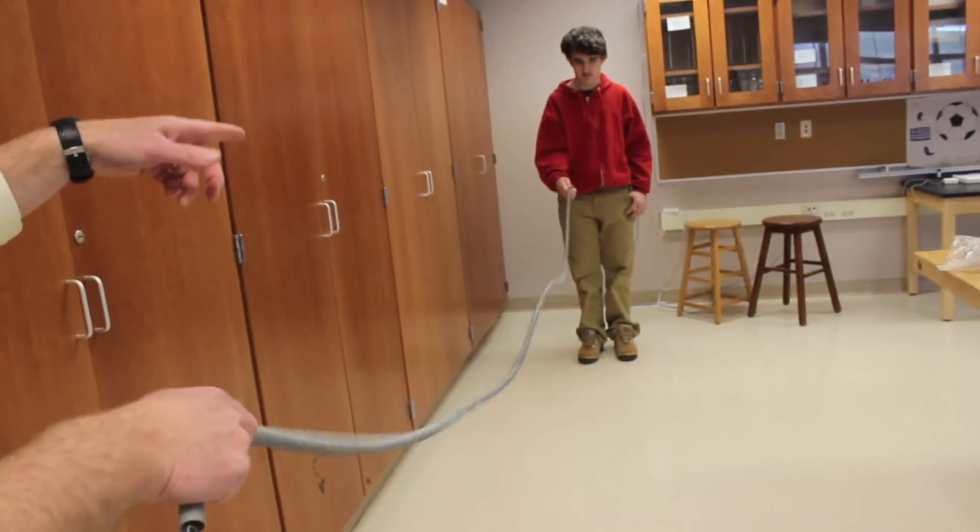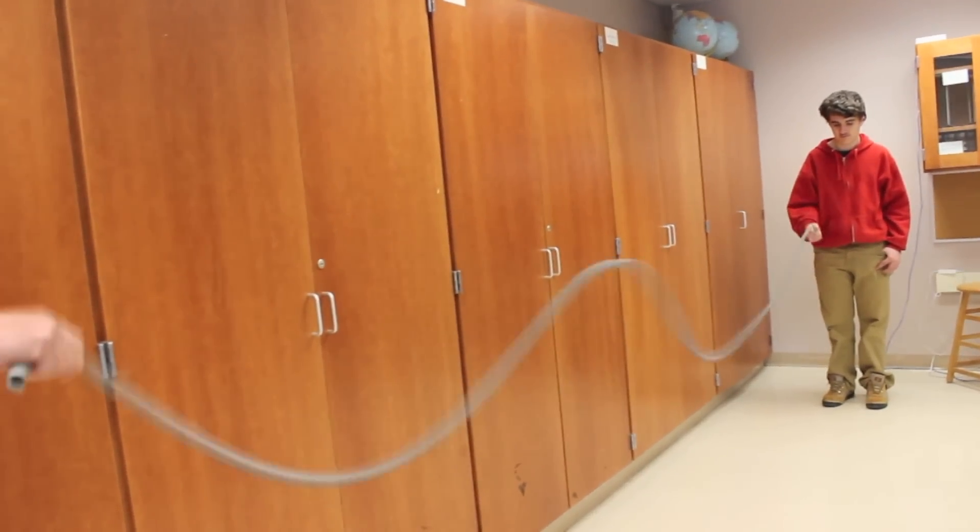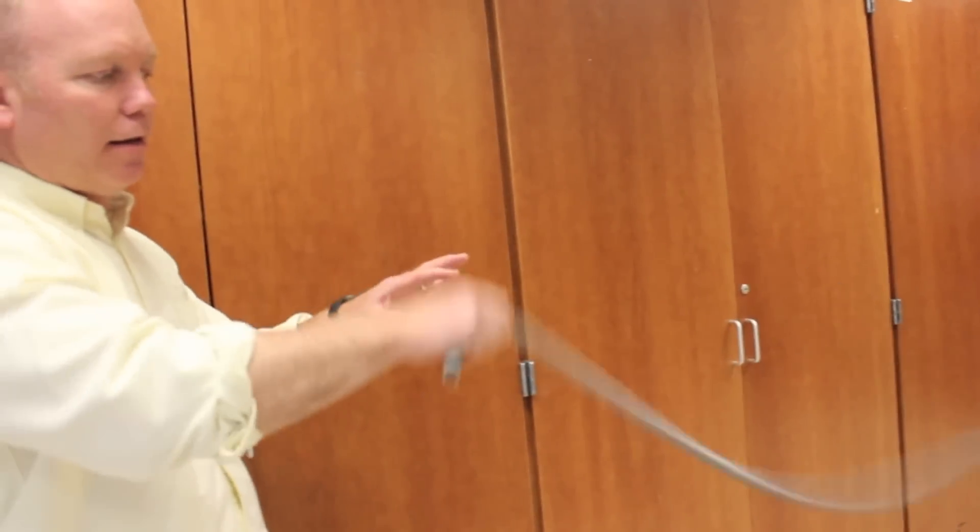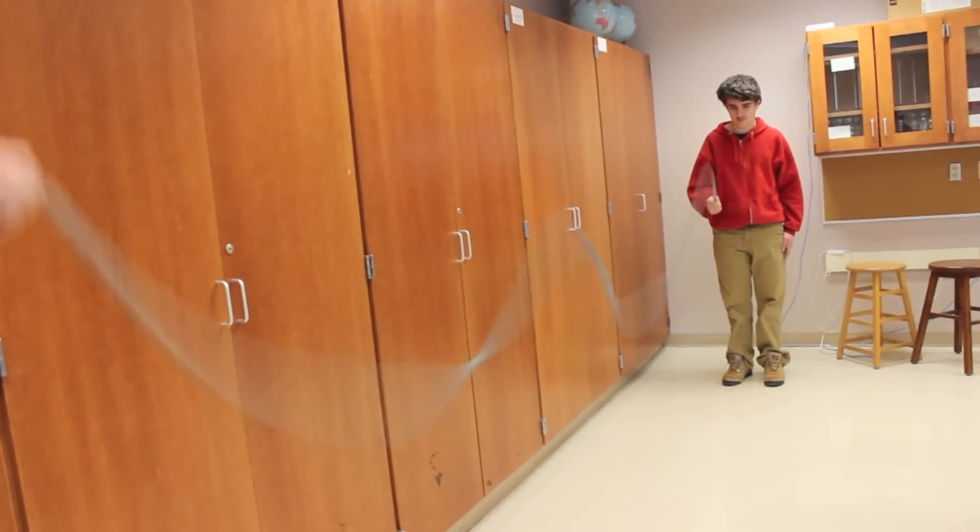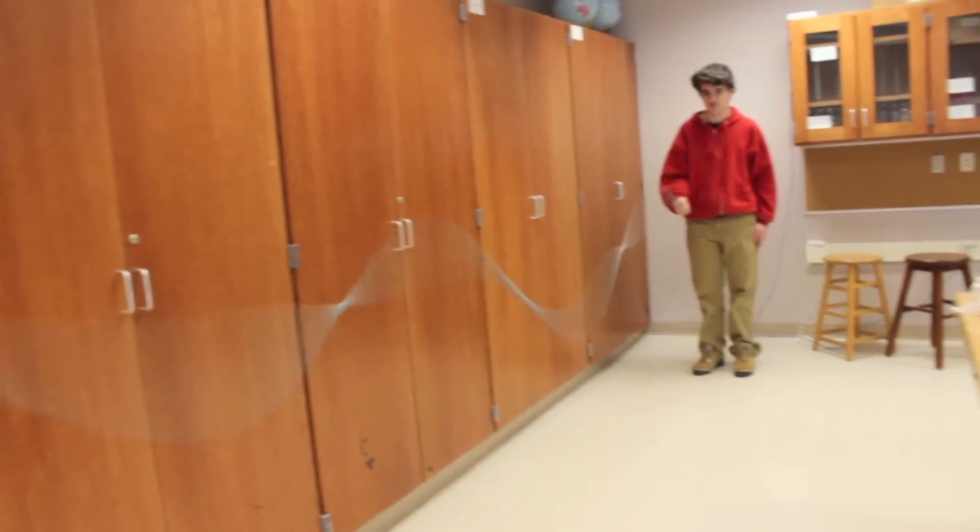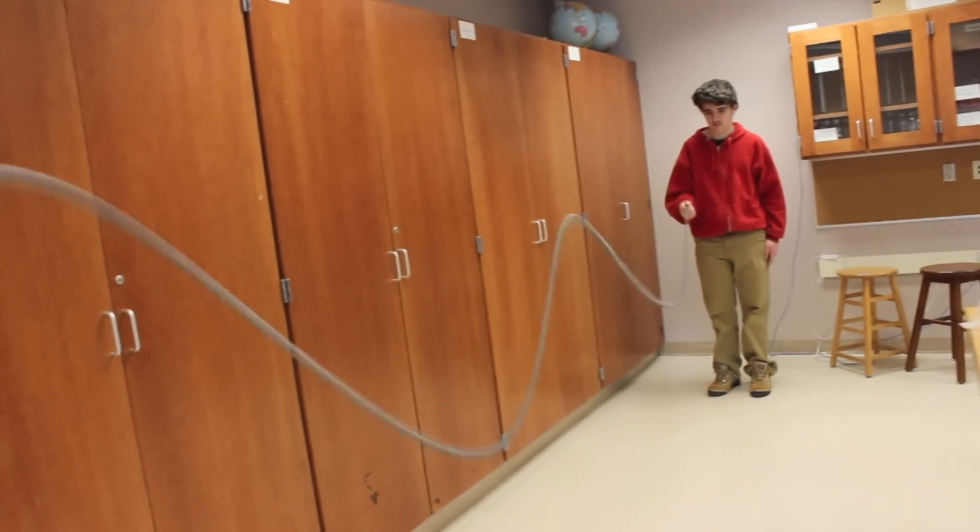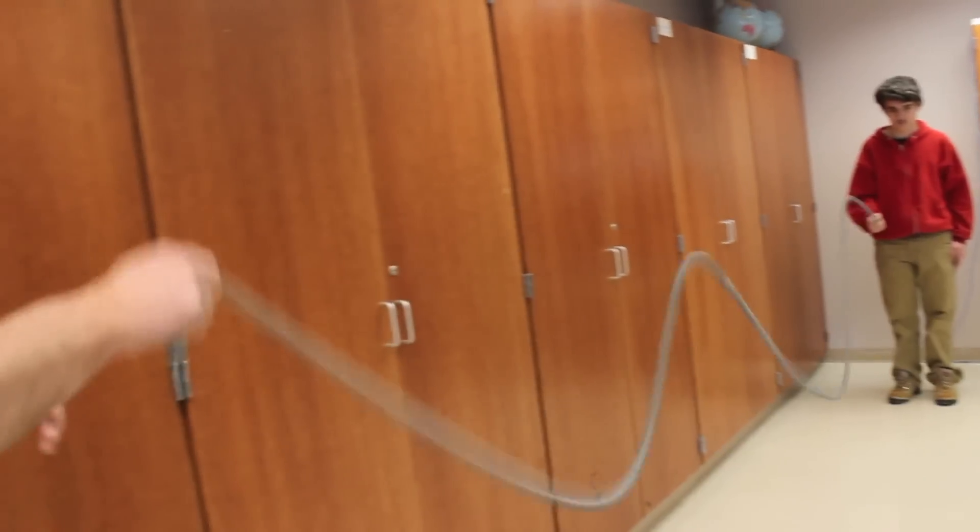I can send a wave pulse through this and it goes back and forth on the spring. Here's a chaotic frequency. They're not lined up. There's no constructive interference. But if I find the right frequency, there we go. Now the outgoing waves are lining up with the reflected waves to make a standing wave.